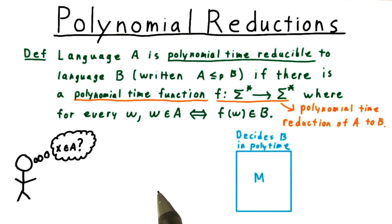Here's the key implication of there being a polynomial reduction of one language to another. Let's suppose that I want to know whether a string x is in the language A, and suppose also that there exists a polynomial decider M for the language B.